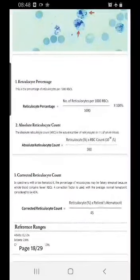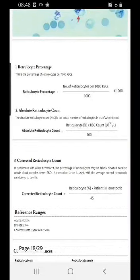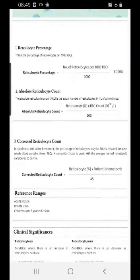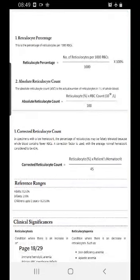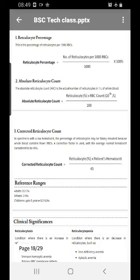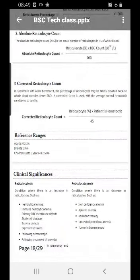To calculate reticulocyte percentage: count 1,000 RBCs, then count the number of reticulocytes. Divide the number of reticulocytes by 1,000 RBCs and multiply by 100. It is very simple and straightforward. To calculate the absolute reticulocyte count, take the percentage you calculated and multiply by the RBC count — which is in millions — divided by 100.